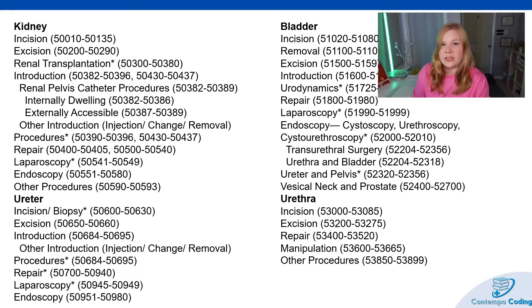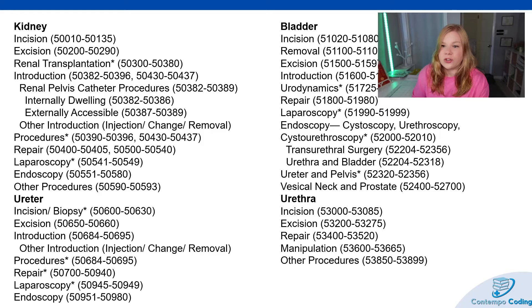With this section of CPT, it starts with the kidneys into the bladder, urethra, etc. We start with the kidney, and then we have our incisions, excisions, and transplant codes — those can get a little bit tricky. Then under introduction we have renal pelvis catheter procedures, internal dwelling, externally accessible, and other introductions, such as injections, changes, or removals. We also have procedures, repair, laparoscopy, endoscopy, and other procedures.